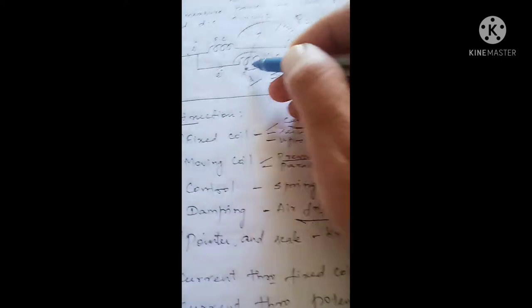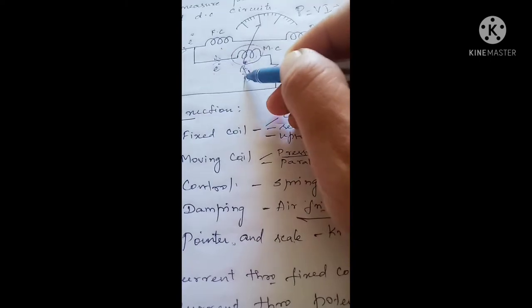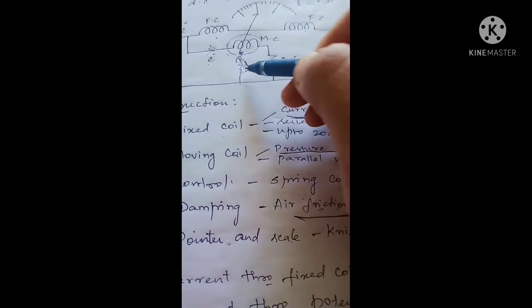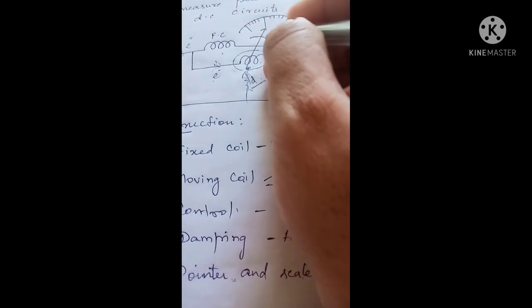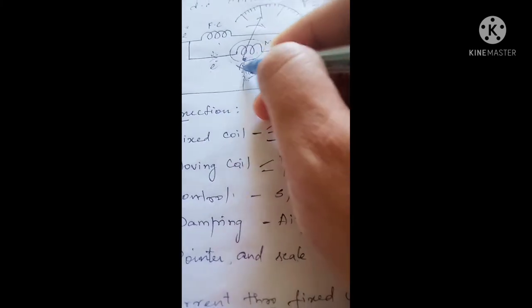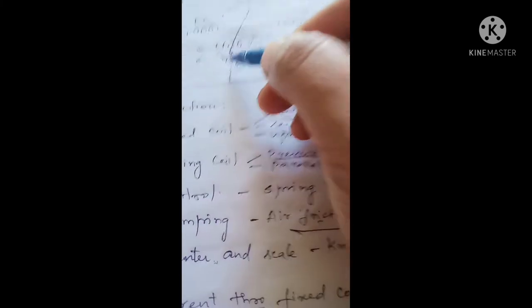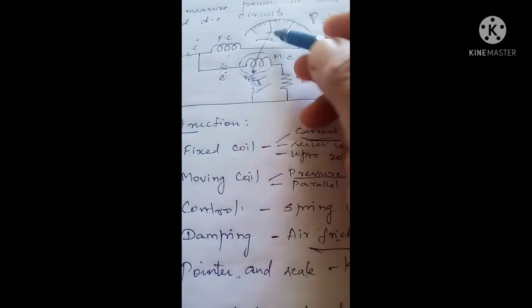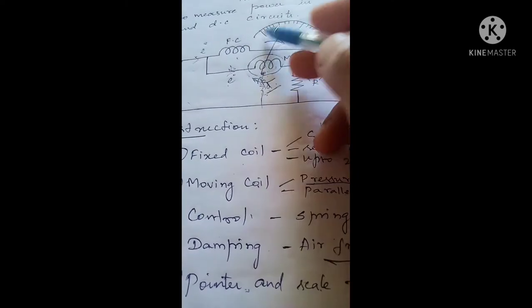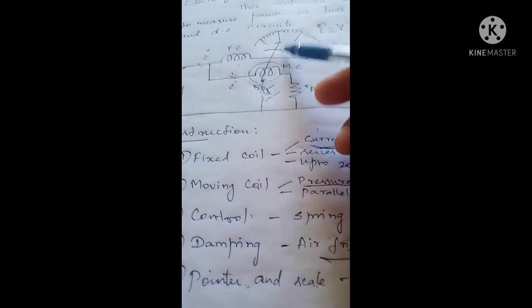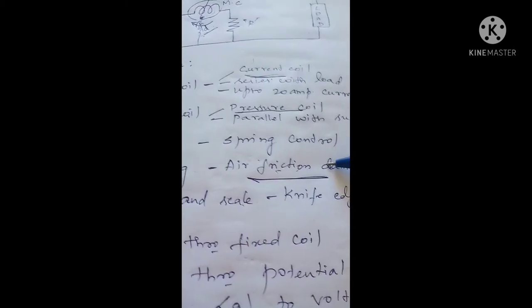The deflecting torque is opposed by the spring arrangement at the bottom of the moving system, which produces an opposing force. When the deflecting torque and spring force get balanced, the pointer comes to a steady position. Any remaining oscillation of the pointer over the scale is reduced by means of air friction damping.